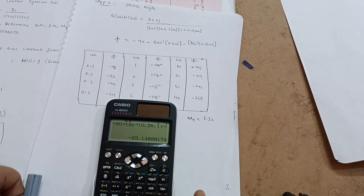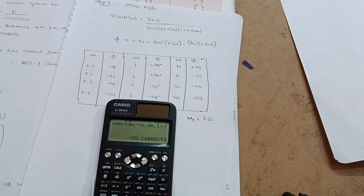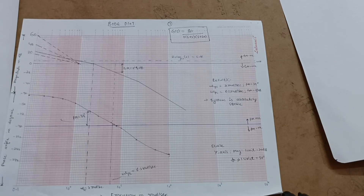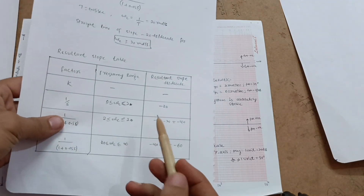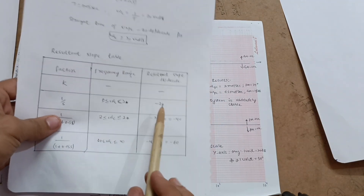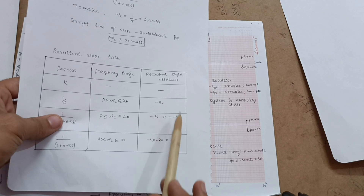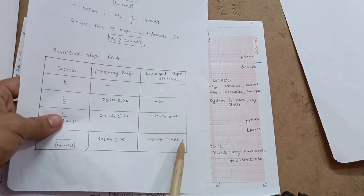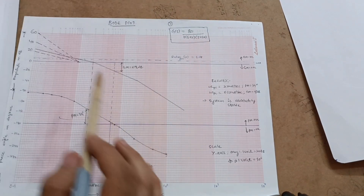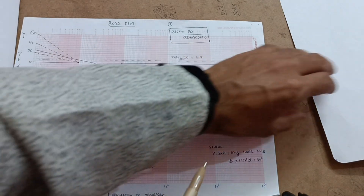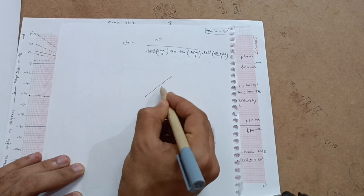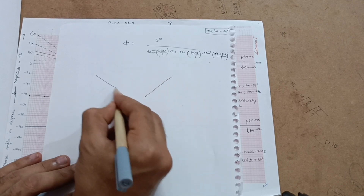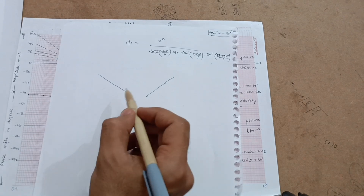Now it is time to proceed to the graph and draw it. First, let's have a look at the table where we have slopes of minus 20, minus 40, and minus 60. You have to draw these in the Bode plot, but remember: one line is having a positive slope and another line indicates a negative slope.